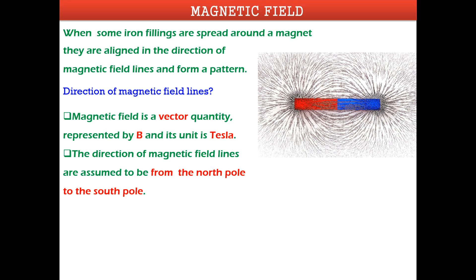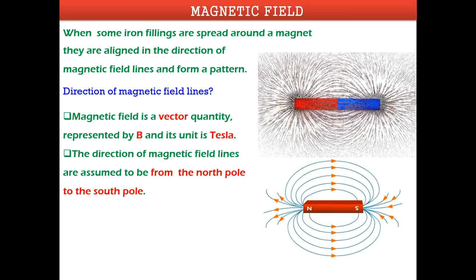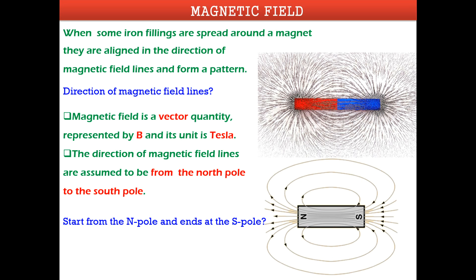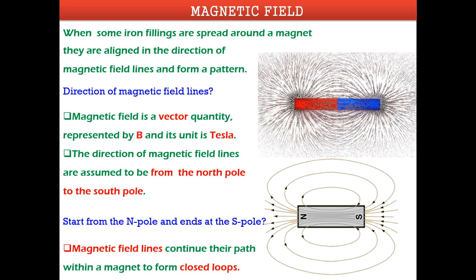The direction of magnetic field lines is assumed to be from the north pole to the south pole of the magnet. The north pole is generally shown in red and the south pole in blue. The lines go from one pole to another, and importantly, magnetic field lines form closed loops — part of the loop is outside the magnet and part is inside. The magnetic field lines continue within the magnet to form closed loops and have no beginning or end.